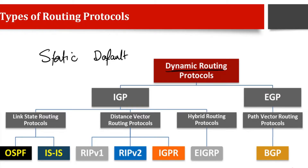Routing protocols are divided into two broad categories. The first is called IGP, Interior Gateway Protocol. The second is called EGP, Exterior Gateway Protocol. These are the two broad categories of dynamic routing. IGP means the routing protocols used within one autonomous system — within one organization like Vodafone, MTN, or British Telecom — within a single management domain. EGP protocols run between different networks.